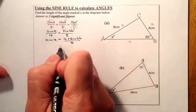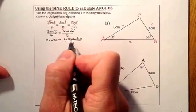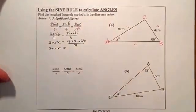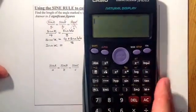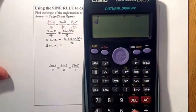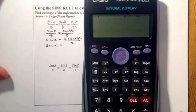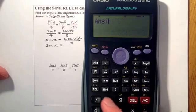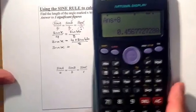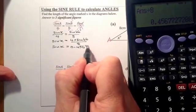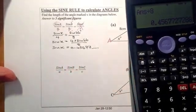From there, I can work this value out. So sine x is going to be equal to... I'll bring my calculator over. I'll go for 4 times the sine of 66 equals, and we'll divide that by 8. That gives me an answer of 0.45677.